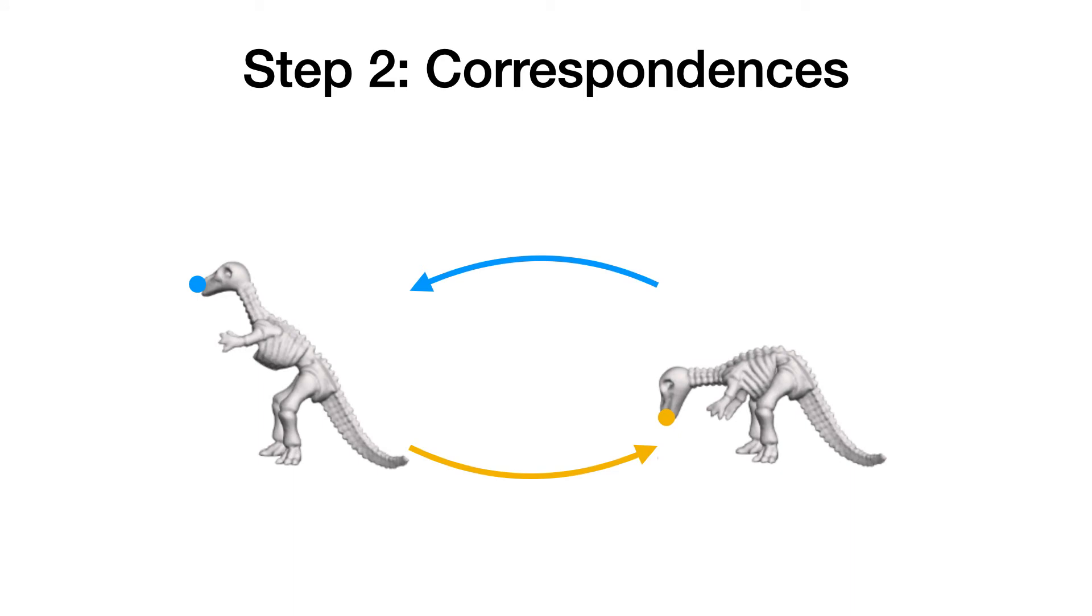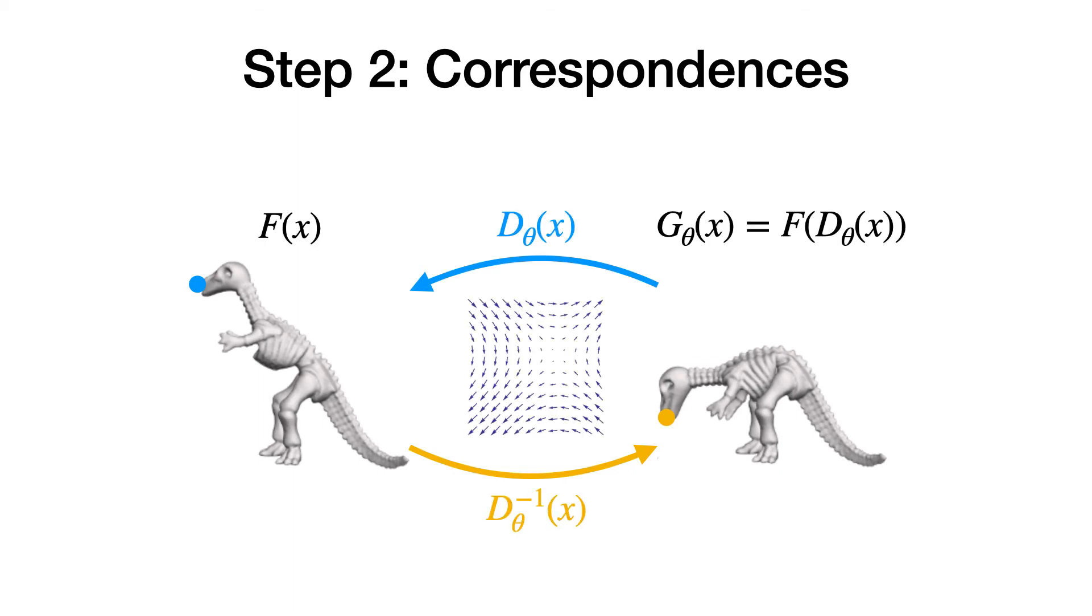Now that we've obtained point samples from the input shape, we need to find their corresponding points in the deformed shape. One way to achieve this is to warp the space with a neural field. Specifically, we want to define the output field G_θ to be F of D_θ(x), where D_θ is a neural field that warps the deformed space towards the input space. Ideally, we want the mapping D_θ to be invertible to obtain good correspondence.